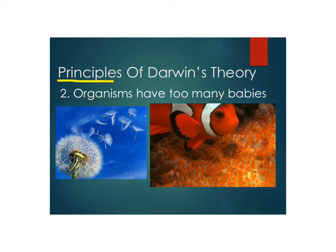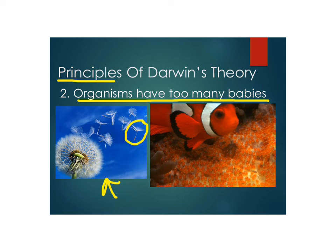The second principle of the theory is that organisms have a lot of babies. For many organisms, they make many more babies than will survive. For example, a dandelion — each of those little things is a seed, and they blow away in the wind, but not every single seed will grow into a new plant. Similarly, a clownfish like Nemo lays hundreds and hundreds of eggs, but not every egg will hatch, and when they hatch, not all the babies will survive. So many organisms have more babies than will survive.